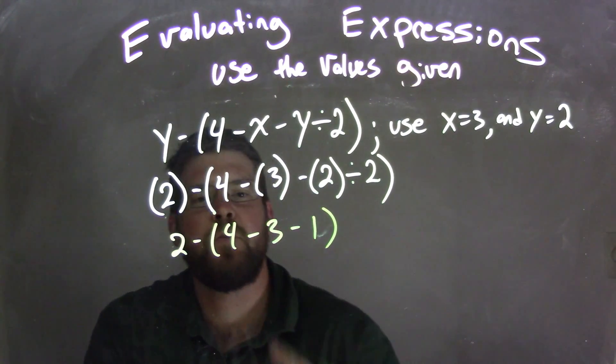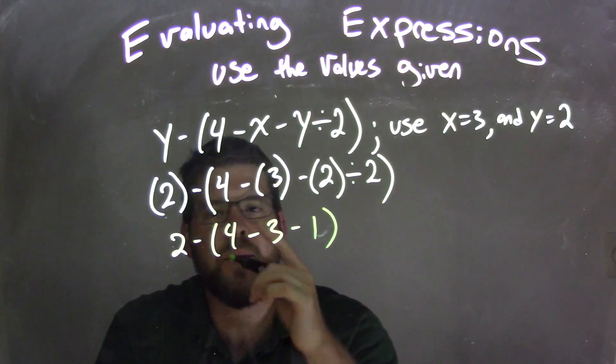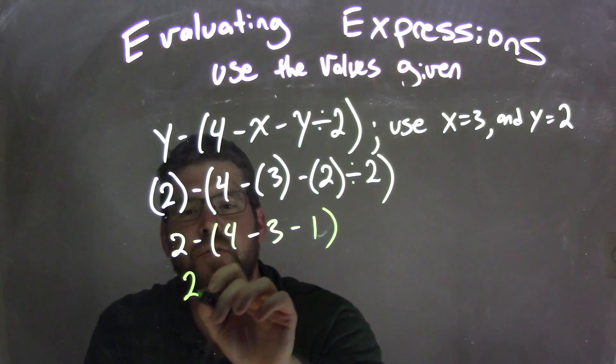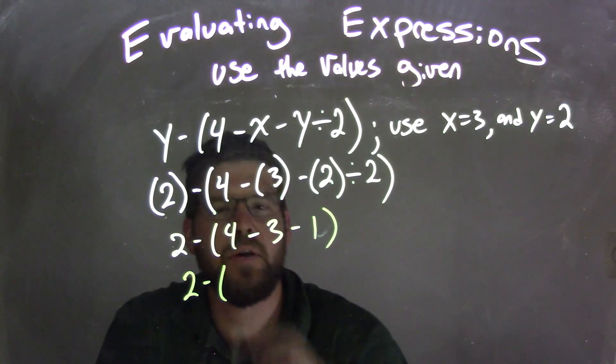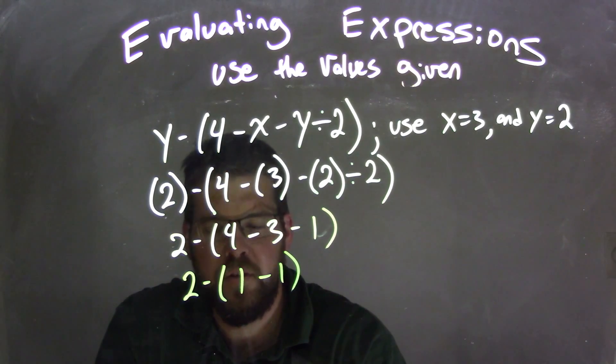So now we're going to simplify the inside. Well, 4 minus 3 comes first, right? Let's read left to right, they're all the same, so we read left to right. 2 is on the outside, because it's outside the parentheses. 4 minus 3 is 1, minus 1, and 1 minus 1 here is 0.